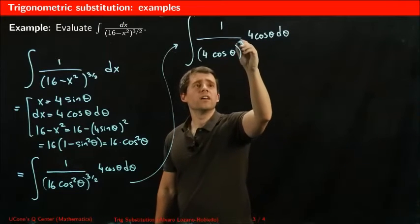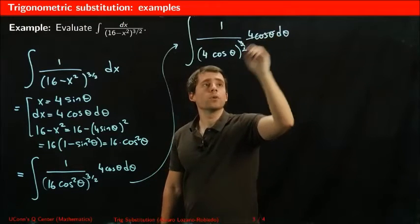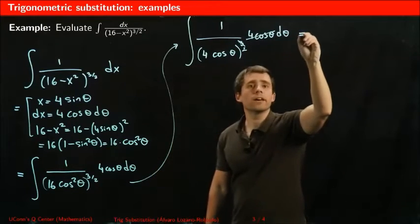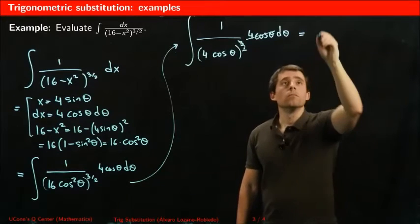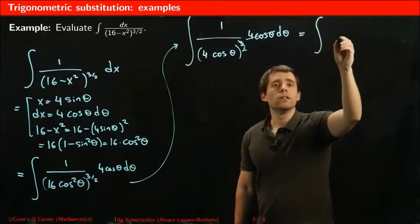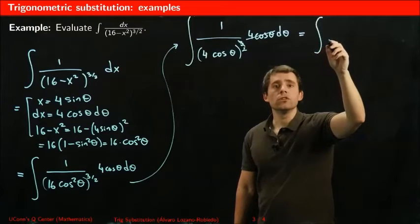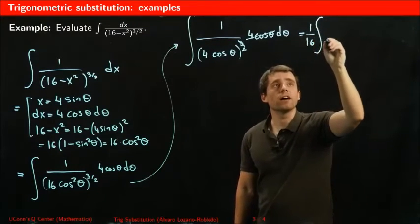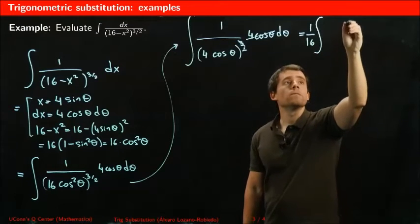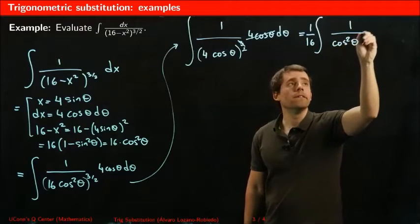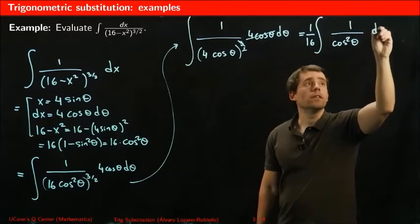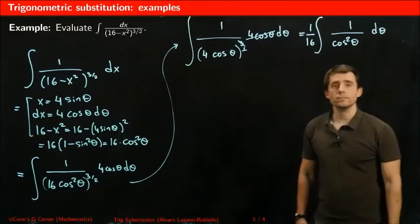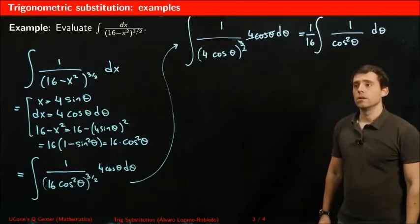So one of these will cancel with all this. And then what I get is 1 over, so 4 squared, I'm going to just write this outside. 1 over 16, 1 over cosine squared theta d theta.